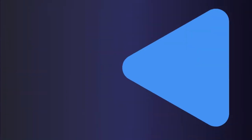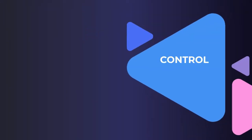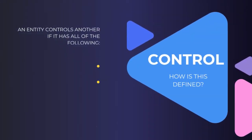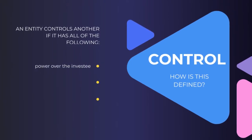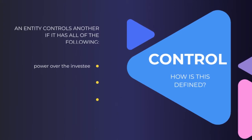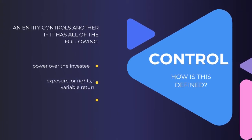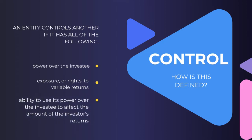So next, let's have a look at control. An entity controls another if it has all of the following: power over the investee, exposure or rights to variable returns, and the ability to use its power over the investee to affect the amount of the investor's returns.